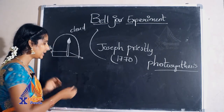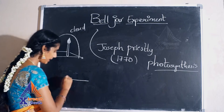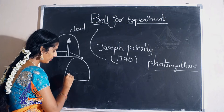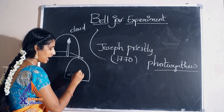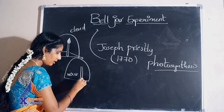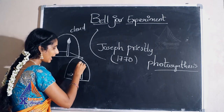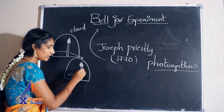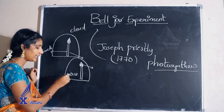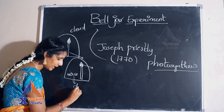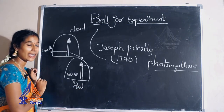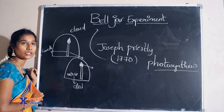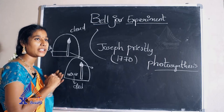Then he did another experiment by taking another bell jar, and he placed a mouse and a candle inside it. Again he observed that the candle was not lighting and the mouse also died — it was not alive. So the candle was not lighting and the mouse also died.